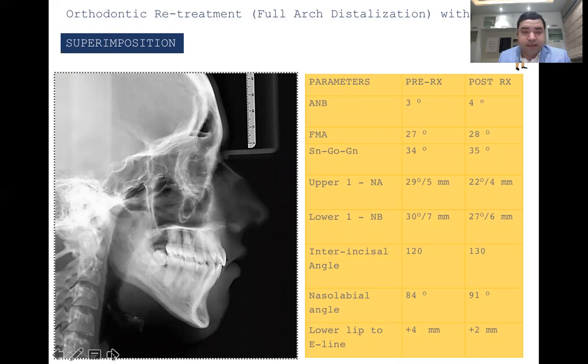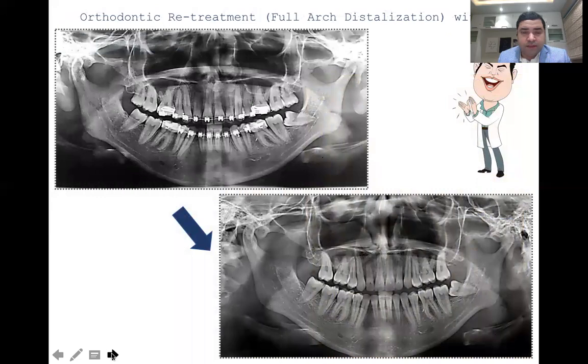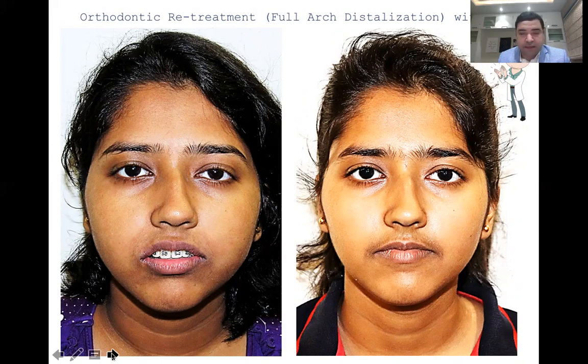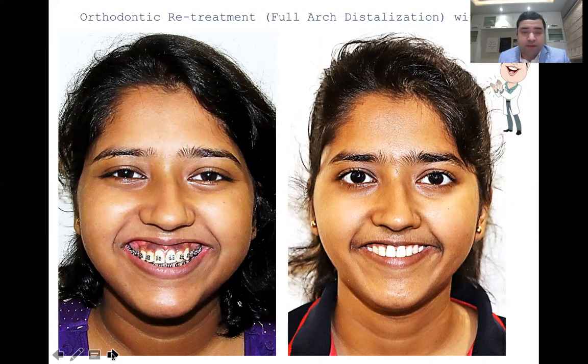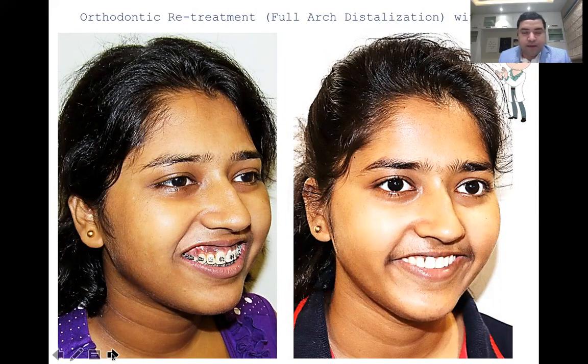These are retreatment cases and therefore very tough — you have to convince the patient and deliver results on an already treated case. The comparison of the OPG clearly shows that no further root resorption occurred after one and a half years of further treatment — that is very promising. The comparison shows great improvement in lip competency and overall dental structure, a great improvement in the gummy smile which was either unaddressed or developed during prior treatment due to heavy forces. Finally, we get a beautiful result and a beautiful smile — restoring the patient's trust in orthodontics.